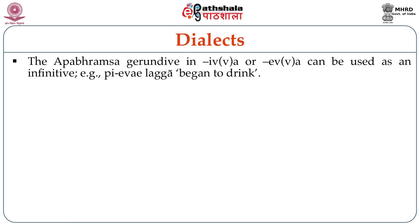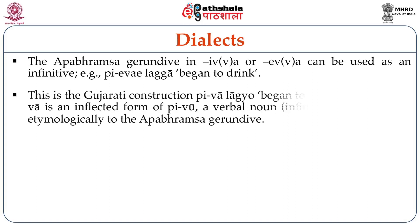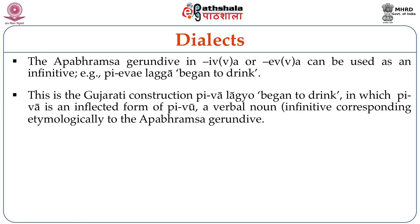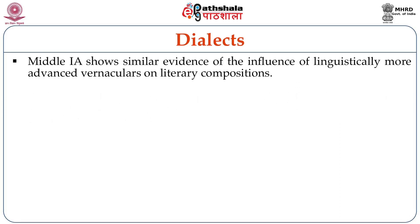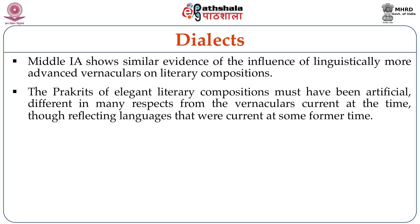The verbal noun/infinitive in ivva or evva can be used as an infinitive. For example, peave lagga (began to drink) — a Gujarati construction peave lagyo (began to drink) — in which peave is an inflected form of the verbal noun infinitive corresponding etymologically to the Apabhramsha gerund. Middle Indo-Aryan shows similar evidence of the influence of linguistically more advanced vernaculars on literary compositions. The Prakrts of elegant literary compositions must have been artificial, different in many respects from the vernaculars current at the time, though reflecting languages that were current at some former time.